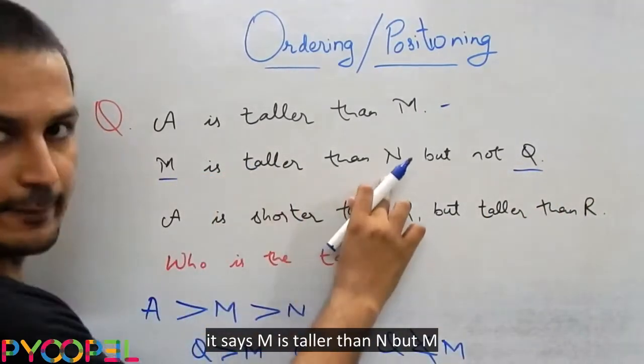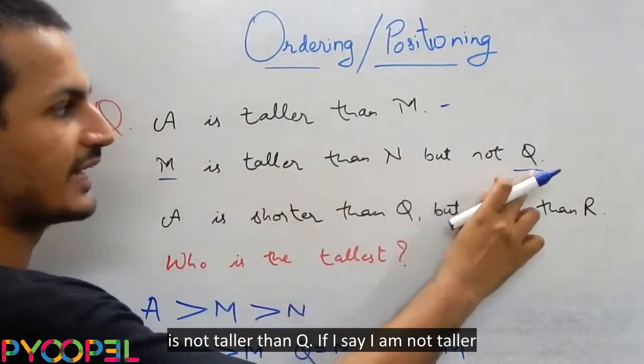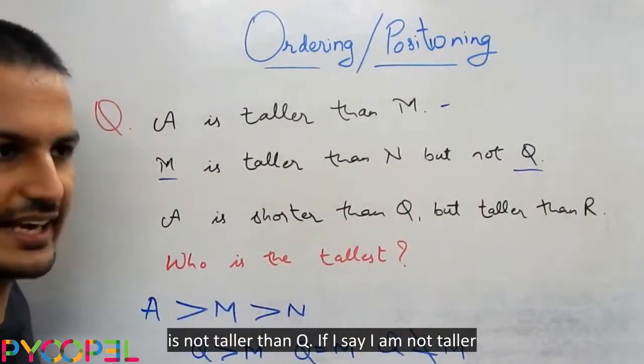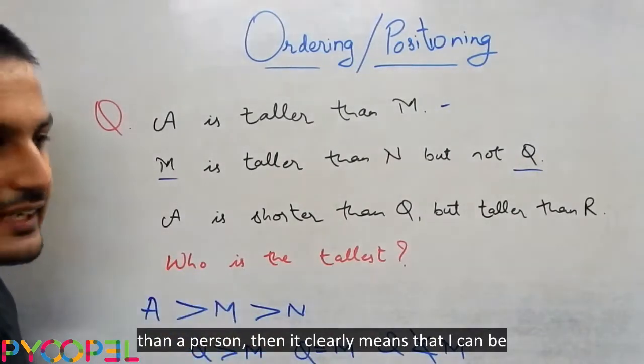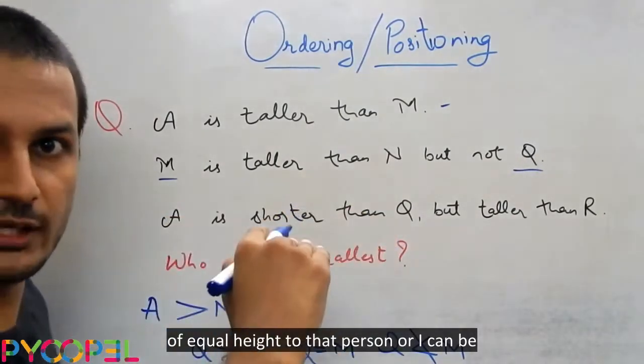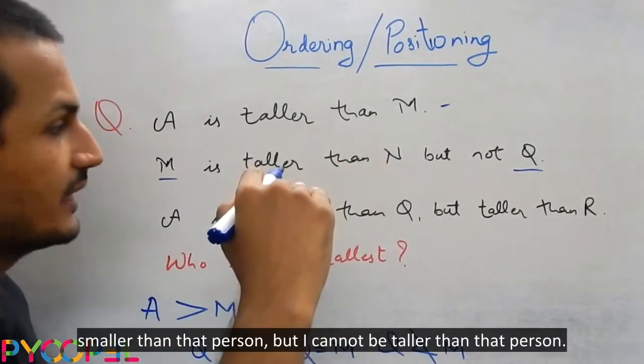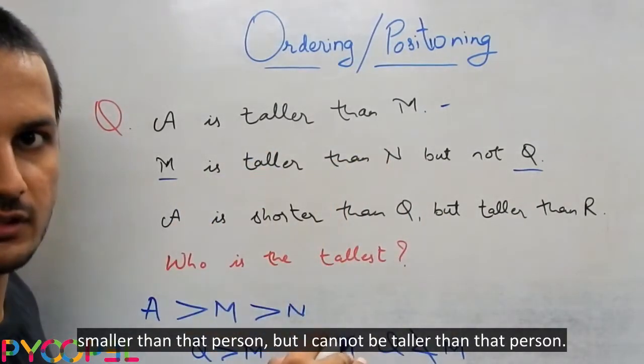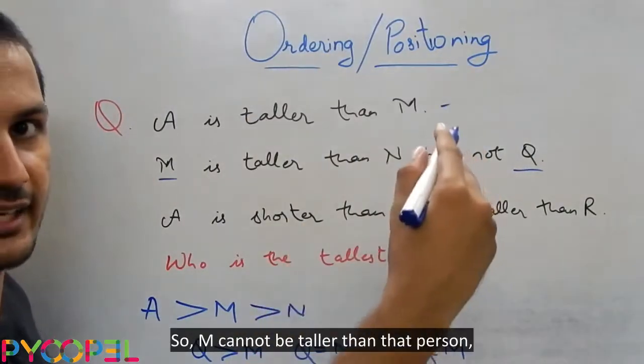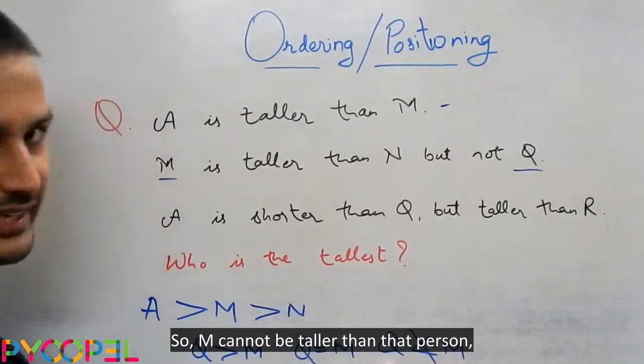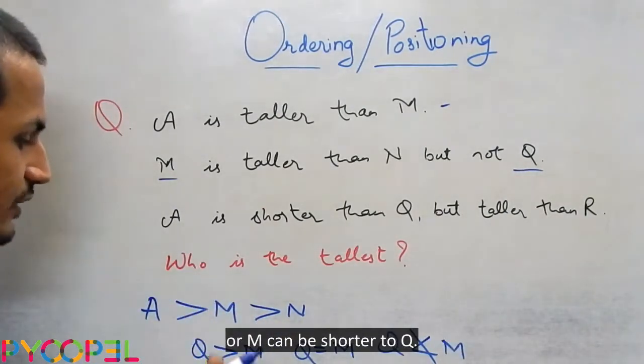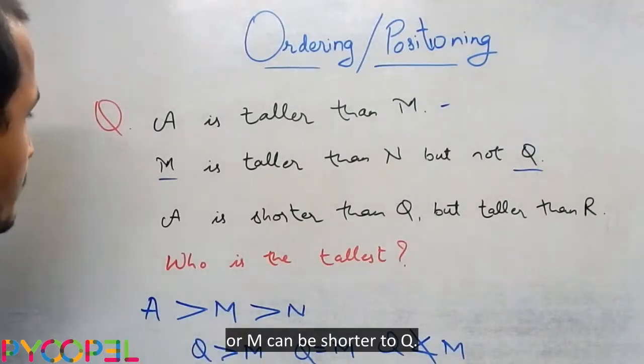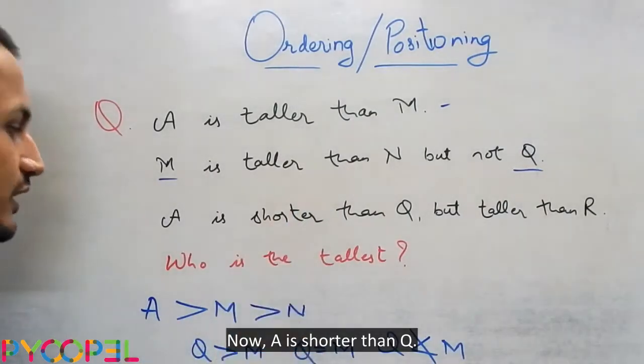It says M is taller than N but M is not taller than Q. So if I say I am not taller than a person, that clearly means that I can be equal, I can be of equal height to that person, or I can be smaller than that person. But I cannot be taller than that person. So M cannot be taller than that person. M can be equal and M can have an equal height to that person, or M can be shorter to Q.